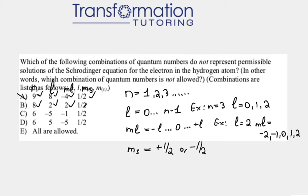And then the last one is ms. ms has to be either plus 1 half or minus 1 half. And it's plus 1 half. So that's fine. And we can eliminate choice b.